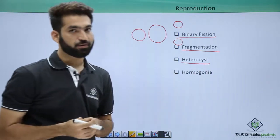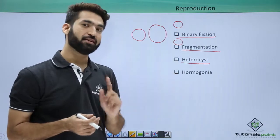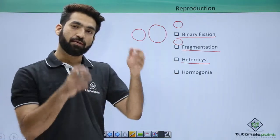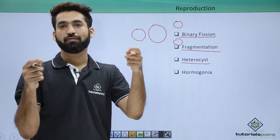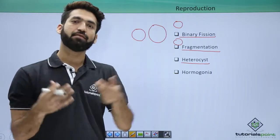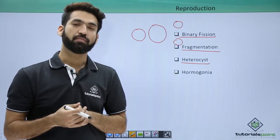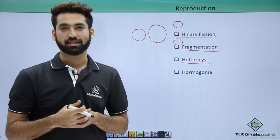The third method is heterocysts. Heterocysts are forms which lack PS2 activity. These heterocysts can separate from the cyanobacteria filament and give rise to new cyanobacteria. After retaining PS2 activity, they become normal vegetative cells.